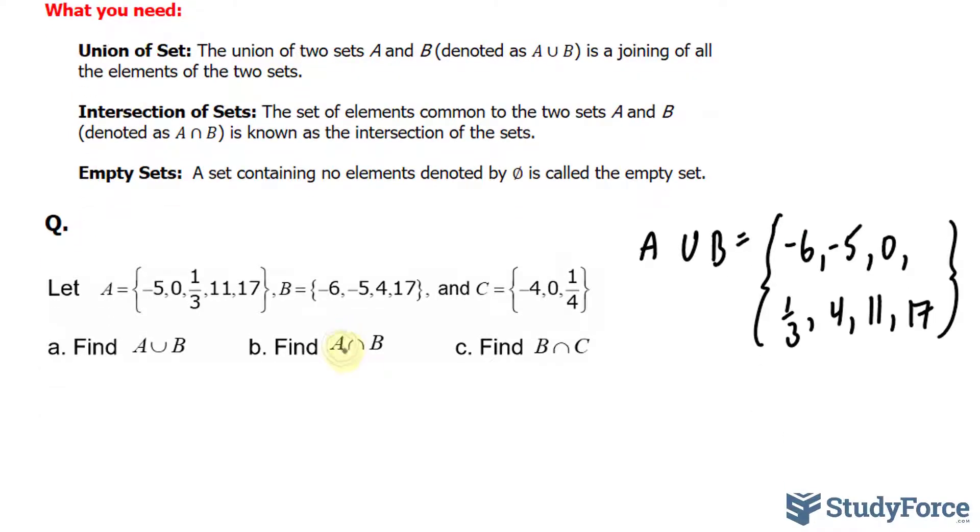For B, we have the intersection of A and B, which means we only write down things that are in common. So the intersection of A and B is, well, we have negative five and seventeen. So two elements found in this set.